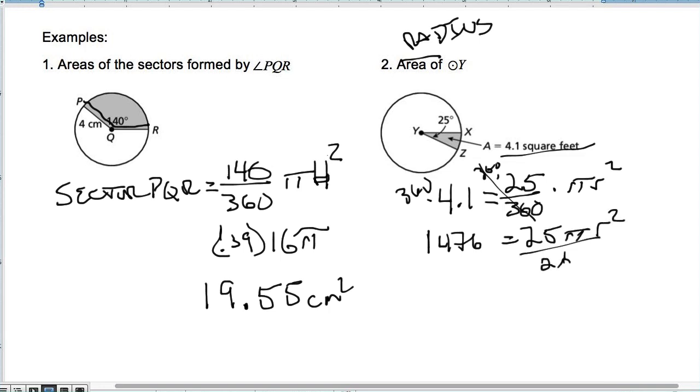Divide both sides by 25 pi. Right, because we've got to get R squared by itself, so divide both sides by 25 pi. So take 1,476 and divide it by 25 pi. You might need to put parentheses around your 25 pi. So once we divide by 25 pi, we're left with 18.793 equals R squared. So then we'll take the square root of that. So square root of that mumbo jumbo gets us to a radius of 4.34. And it's in feet.